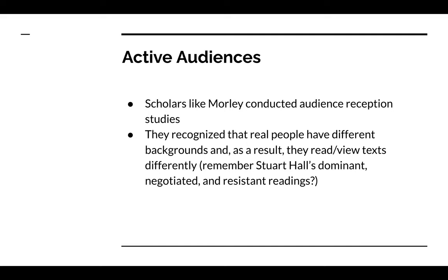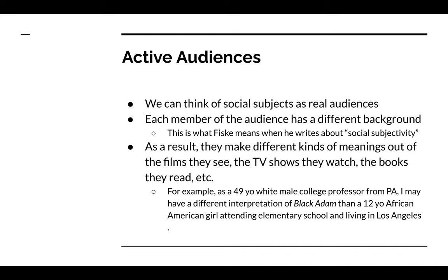You can remember Stuart Hall's three different forms of reading: the dominant, negotiated, and resistant readings. Hall said there were three different ways we could look at a text. What Morley is saying is that the ways we look at texts have a lot to do with our personal histories—where we grew up, how we identify, where we went to school, how much money our parents had, how much education we have. All these things feed into the ways you interpret messages coming across in different kinds of media texts. This is what Fiske means when he's writing about social subjectivity.